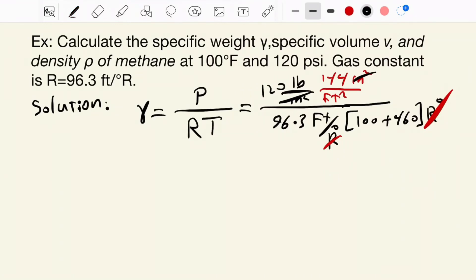And the result becomes gamma equal to 0.320 pounds per foot cube. This number comes from 120 times 144 divided by 96.3 times 560.